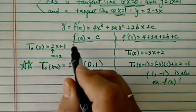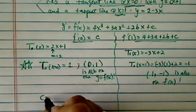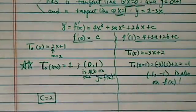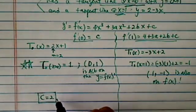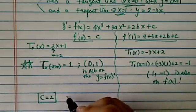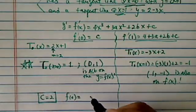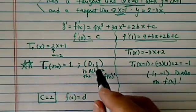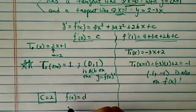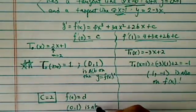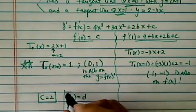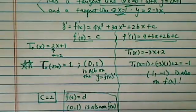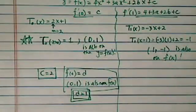f'(0) equals c, which is the slope. So c equals 2. That's pretty easy to find. Once you have c equals 2, let's find d, because f(0) equals d, and we know that the point (0, 1) is on f(x). Using those two pieces of information, you see that d equals 1.